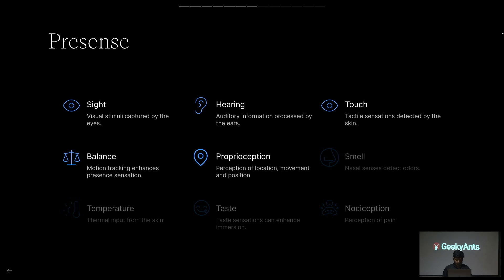That is proprioception. Smell is about how the environment smells — if you are in a digital restaurant and you feel the smell of food like sushi or biryani, you feel you belong to that world. Temperature, taste, and nociception are also elements of presence.